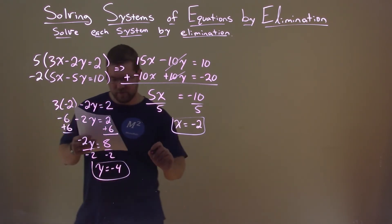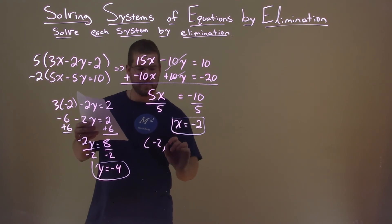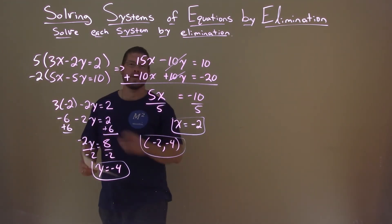X is negative 2. Let's write that as a coordinate point: negative 2, negative 4. And there we have it, our final answer.